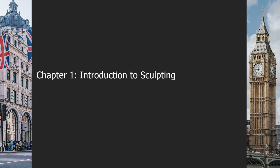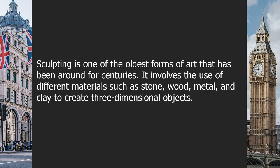Chapter 1: Introduction to Sculpting. Sculpting is one of the oldest forms of art that has been around for centuries. It involves the use of different materials such as stone, wood, metal, and clay to create three-dimensional objects.